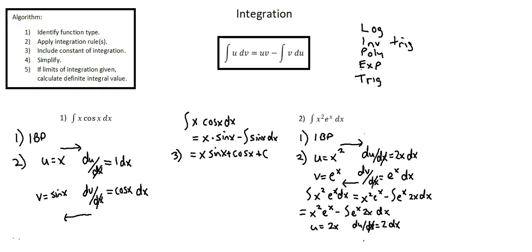The remaining function is e to the power of x, so dv/dx equals e to the power of x. Isolating dv, we have e to the power of x dx. Integrating e to the power of x to get our v term, v is also e to the power of x. From u, differentiating to du; from dv, integrating to v.